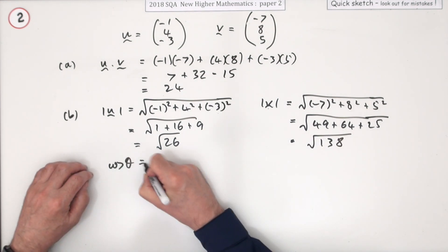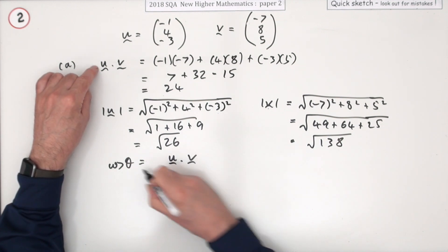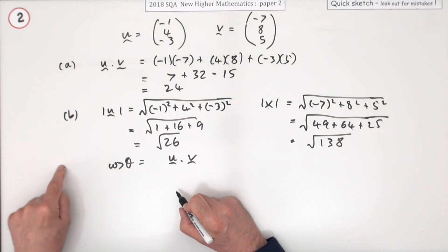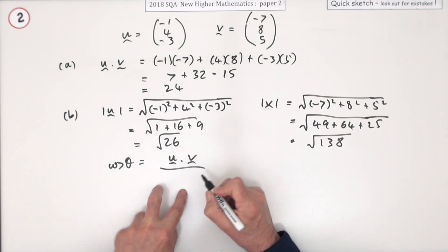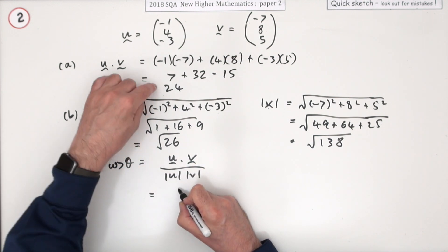Now the cosine of the angle is given by the scalar product formula, which was u dot v equals the length of u times the length of v times the cosine of the angle in between. So the cosine of the angle between will be divide by them: length of u, length of v. Put in the figures: 24 over root 26 times root 138.